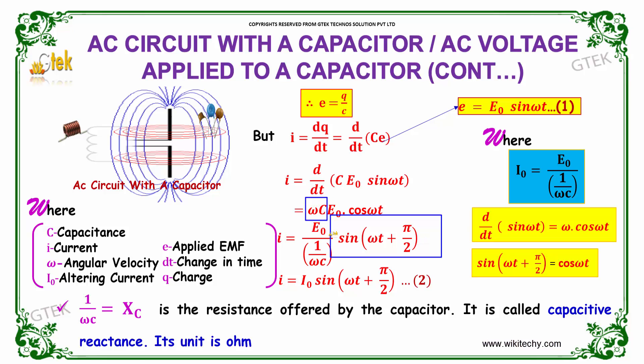ωC can be placed as 1 by ωC, which is nothing but you will be getting E0 by 1 by ωC into sin(ωt + π/2).